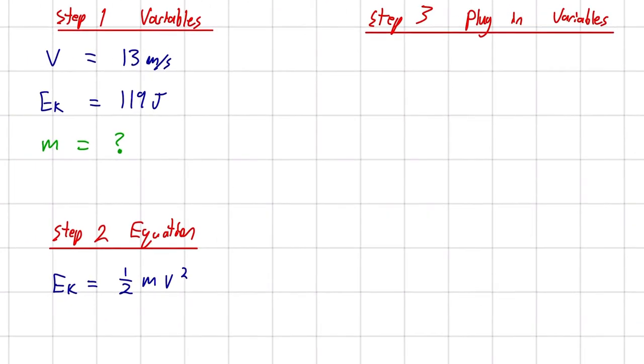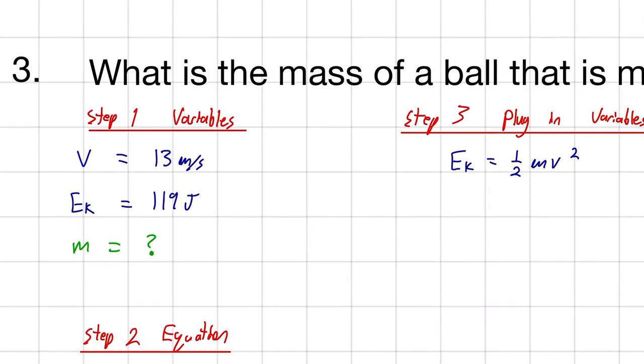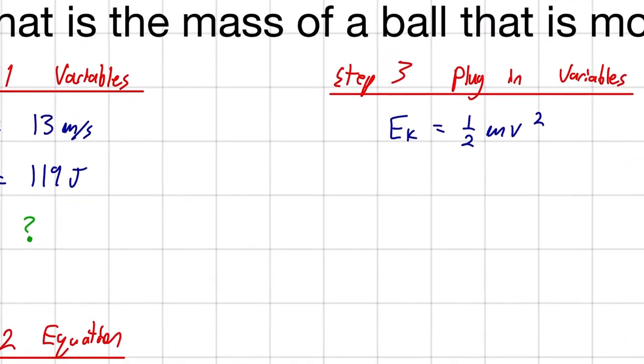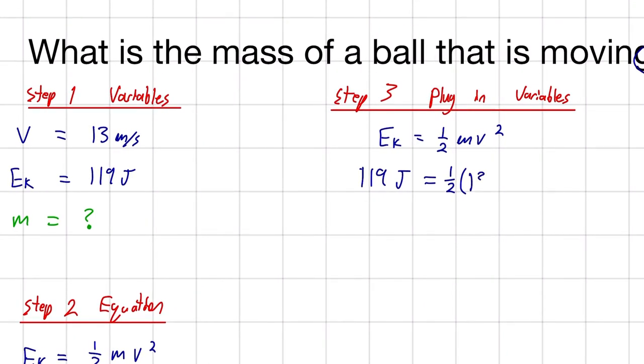All right, so let me start by rewriting this equation. And then, Ek is equal to one-half, and now we want to plug in each one of these variables. So, Ek, that's 119 joules, is equal to one-half.